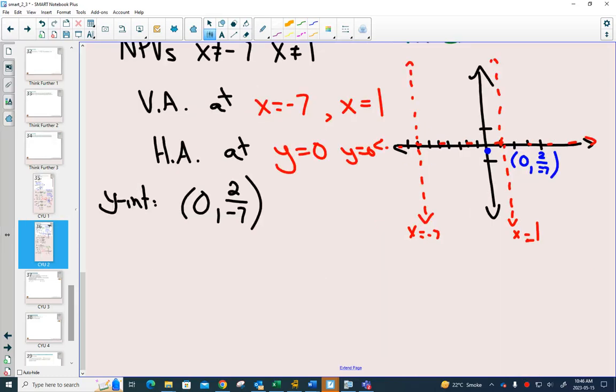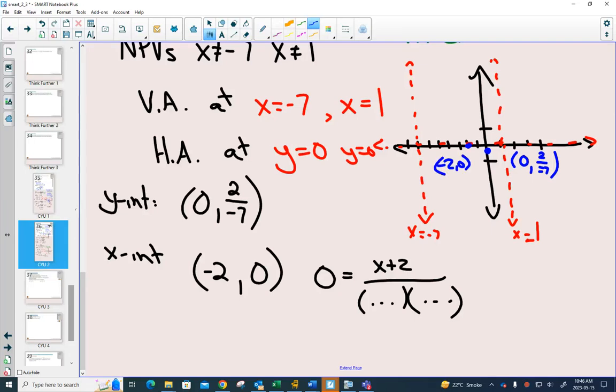x intercepts. Plug in 0 for y. The only time your fraction will equal 0, it doesn't even matter what's in your denominator, is where your numerator is equal to 0. So in this case, it's really easy to solve that you're going to have it at negative 2.